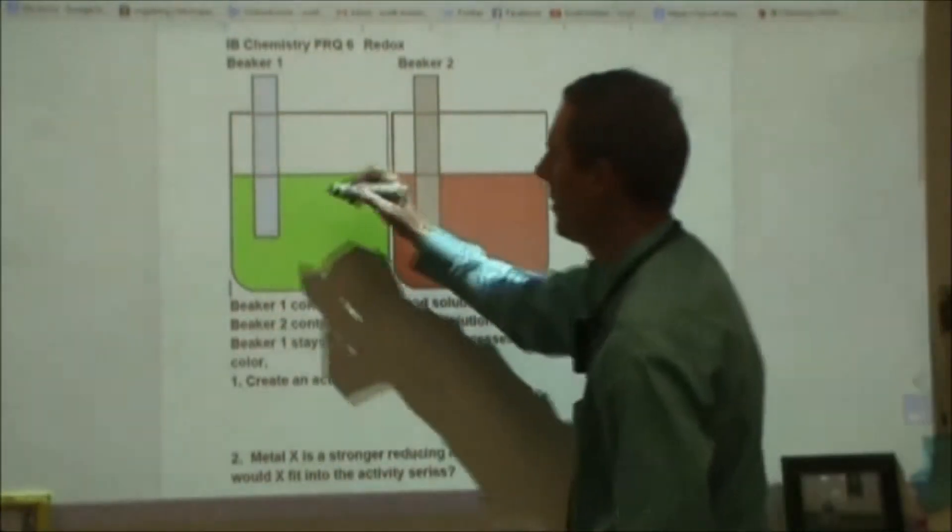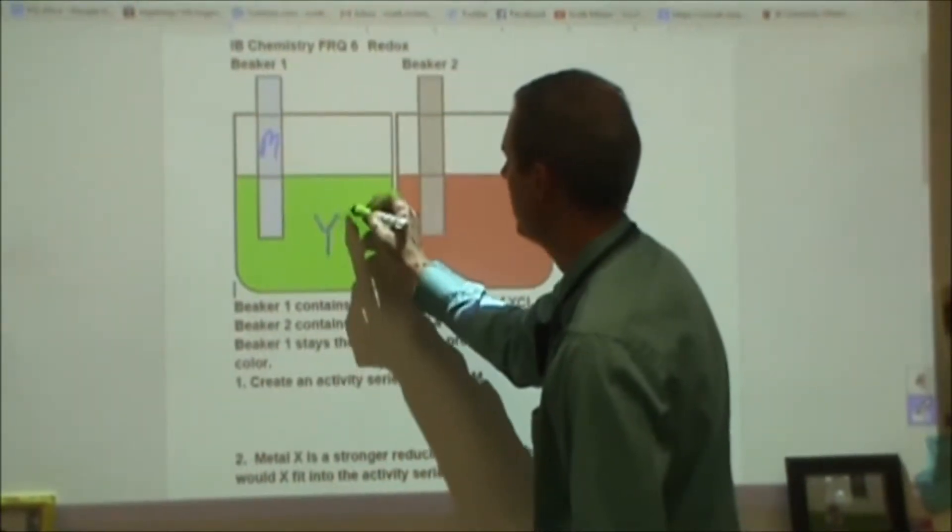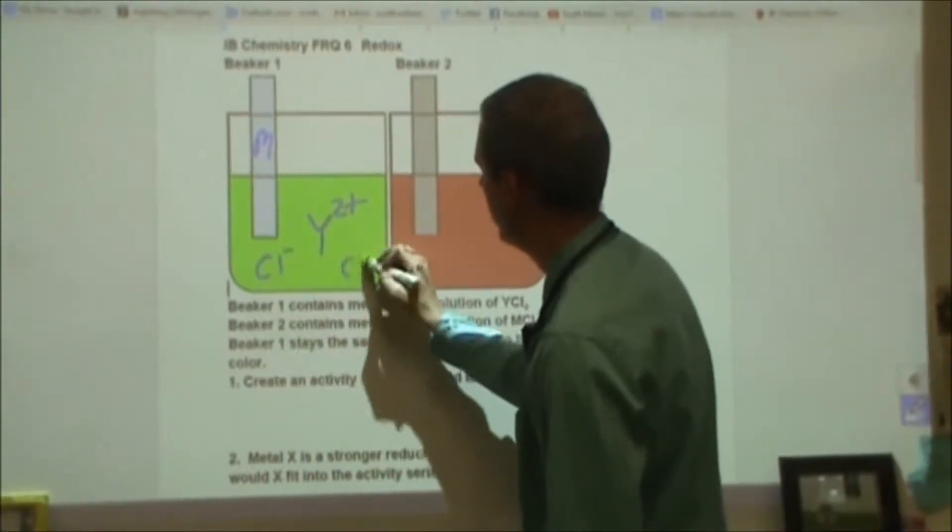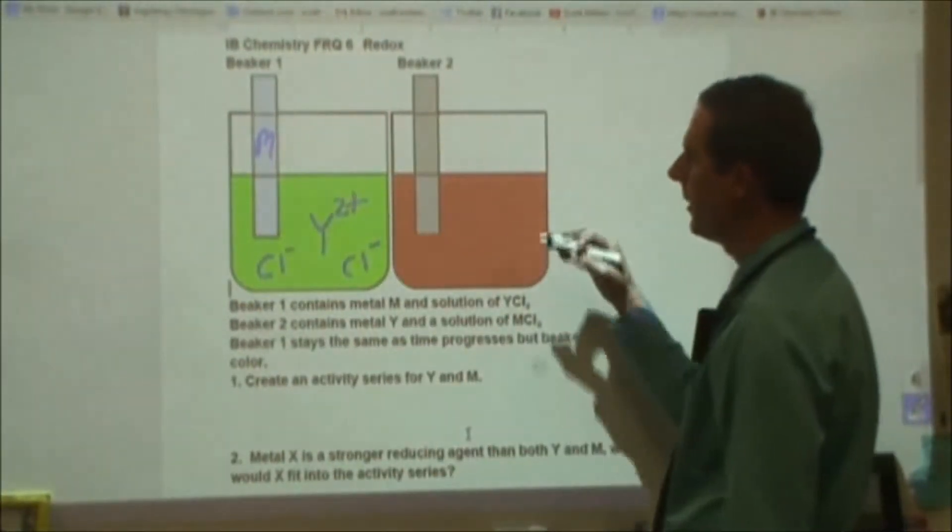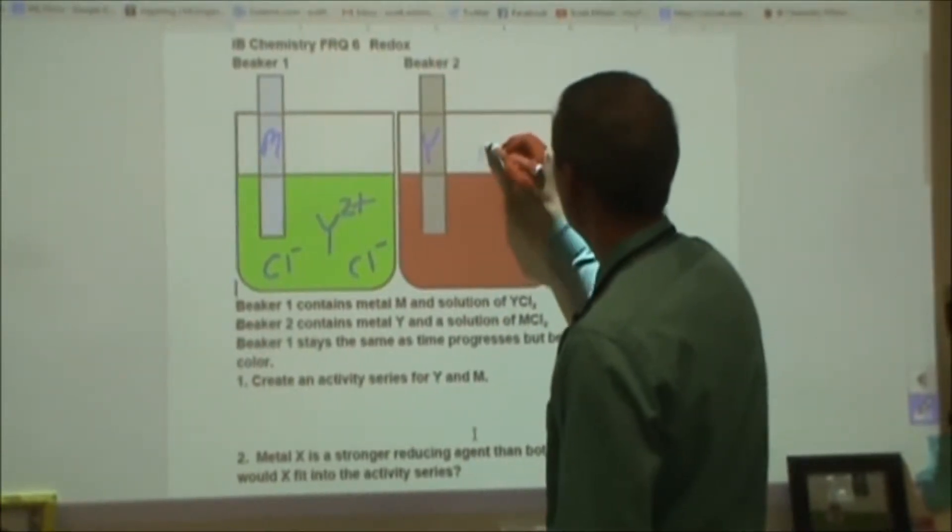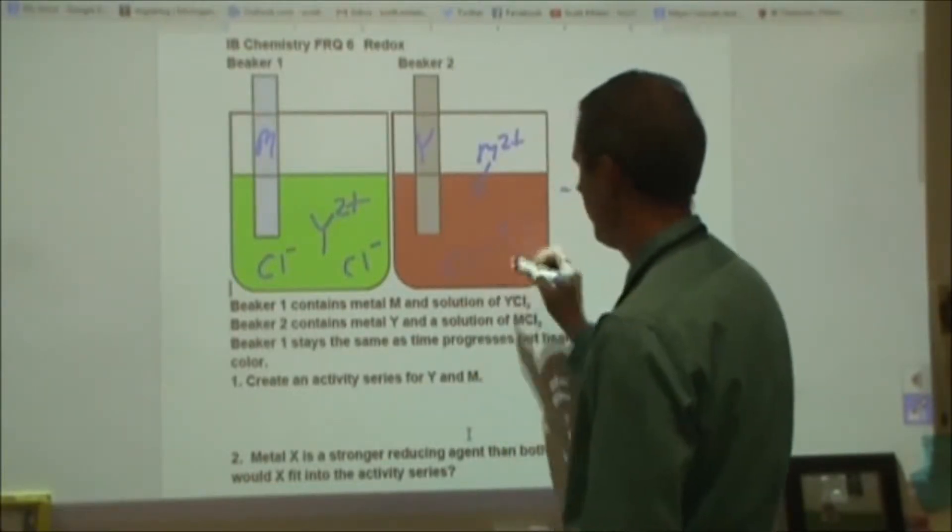It says here beaker 1 contains metal M and then a solution of YCl2, so we're going to have some Y2+ ions and some chloride ions, going to be a spectator ion there. In the other one we have the opposite, we have Y metal and then we have M2+ ions in here and then some Cl- ions as well.